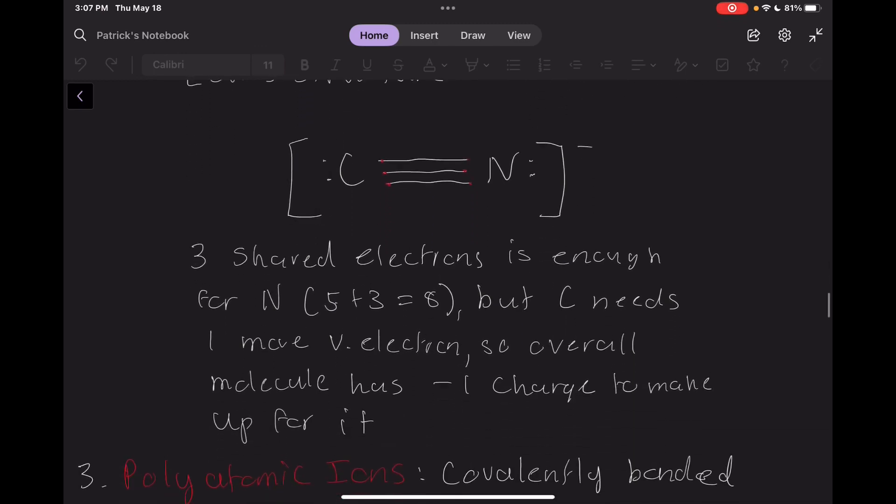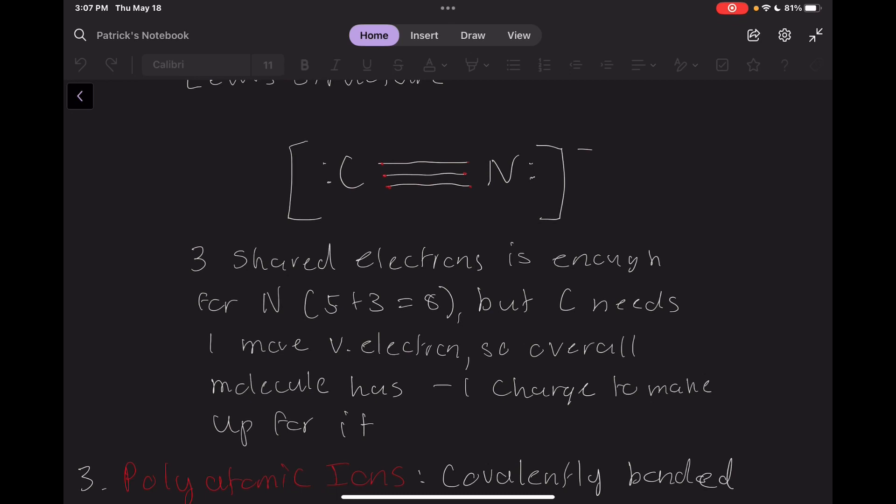Carbon, however, gets the short end of the stick here. It needs four more valence electrons, but the triple bond only gives it three. Because carbon is short one electron, we say that the overall molecule has a charge of negative one to make up for it.